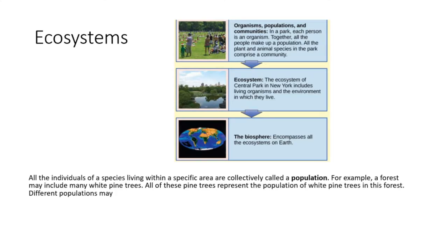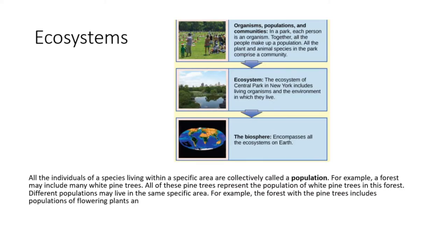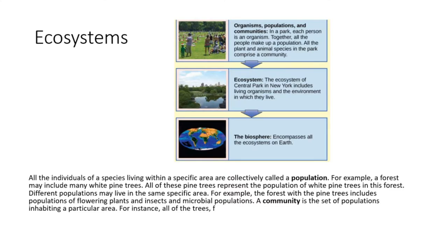Different populations may live in the same specific area. For example, the forest with the pine trees includes populations of flowering plants, insects, and microbial populations. The community is the set of populations inhabiting a particular area. For instance, all the trees, flowers, insects, and other populations in a forest form the forest's community.